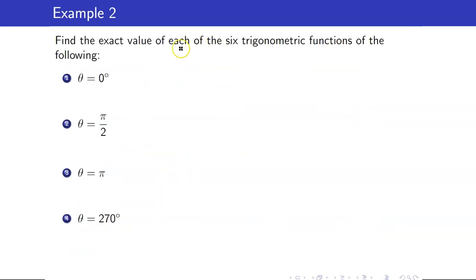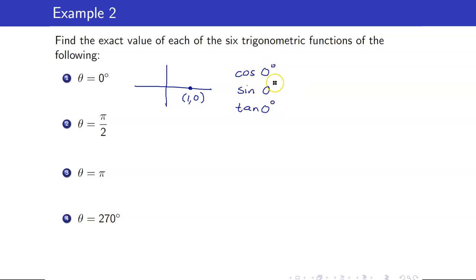Let us find the exact values of the six trig functions for theta = 0. The terminal side of 0 degrees is the positive x-axis, so we take the point (1, 0), giving x = 1, y = 0, R = 1. Therefore cosine 0 = 1, sine 0 = 0, tangent 0 = 0/1 = 0.